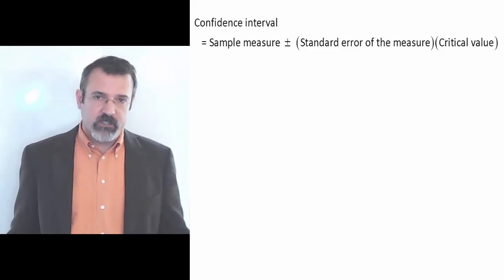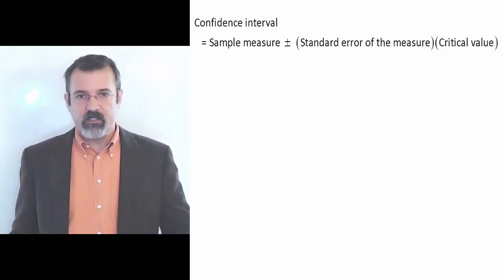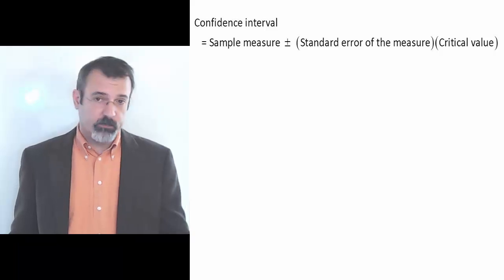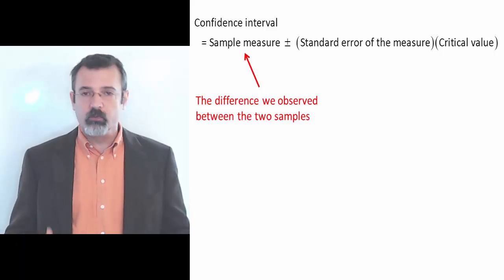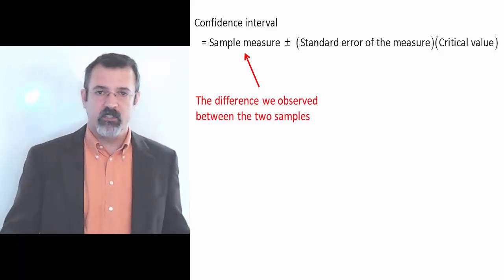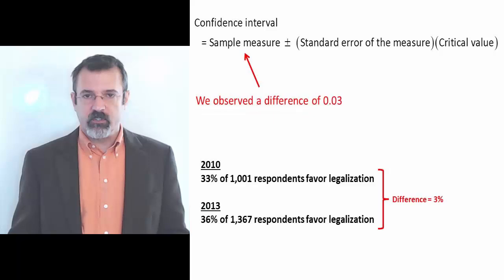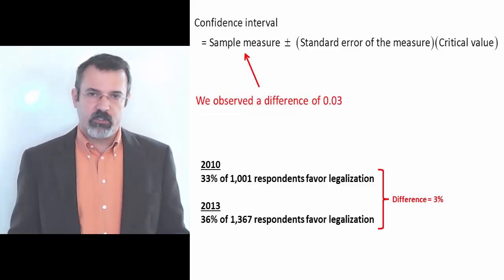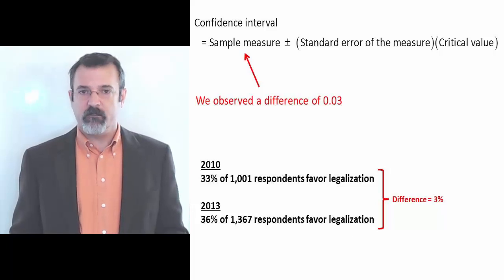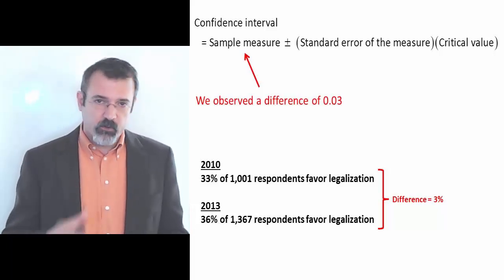The confidence interval is the sample measure plus or minus the standard error of the measure multiplied by a critical value. In this case, the sample measure is the difference in the polling results that we saw in 2010 and 2013. In 2010, 33% of respondents favored legalization. In 2013, 36% of respondents favored legalization. That's a difference of three percentage points.